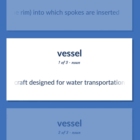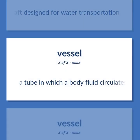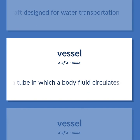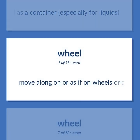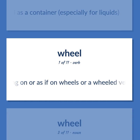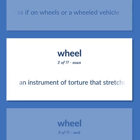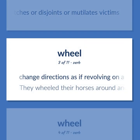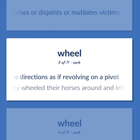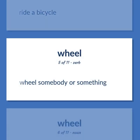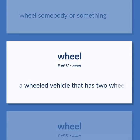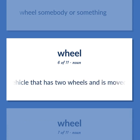VESSEL: A craft designed for water transportation. A tube in which a body fluid circulates. An object used as a container, especially for liquids. WHEEL: Move along on or as if on wheels or a wheeled vehicle. An instrument of torture that stretches or disjoints or mutilates victims. Change directions as if revolving on a pivot — 'they wheeled their horses around and left.' Ride a bicycle. Wheel somebody or something. A wheeled vehicle that has two wheels and is moved by foot pedals.